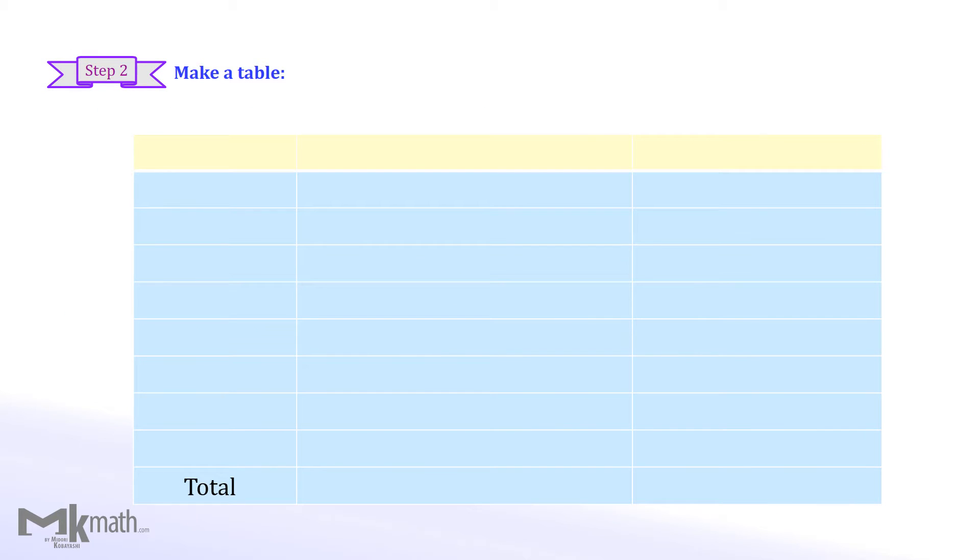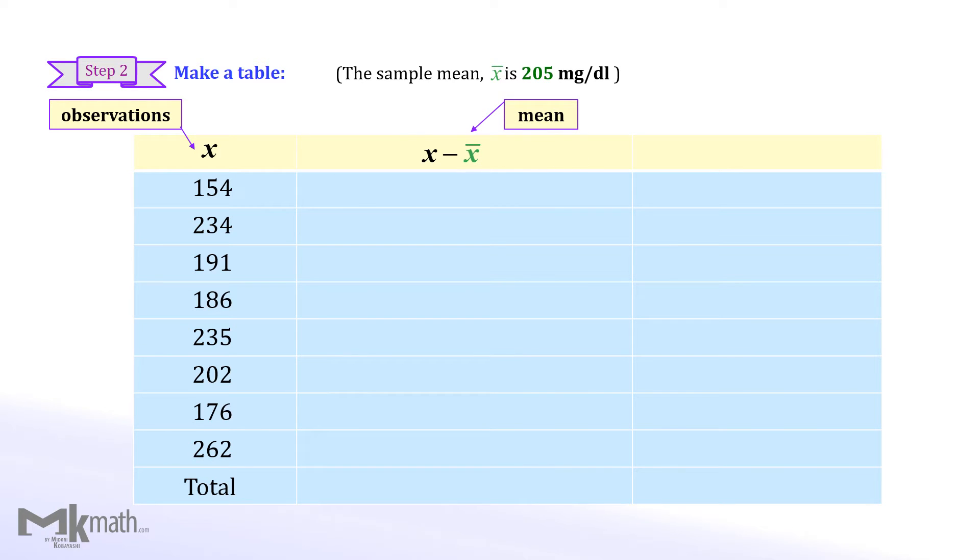Second step, make a table to find the sum of the squared deviations. For the first column, place all observation values. Next column, calculate the deviation from the mean for each observation. Lastly, calculate the squared deviations in the last column.